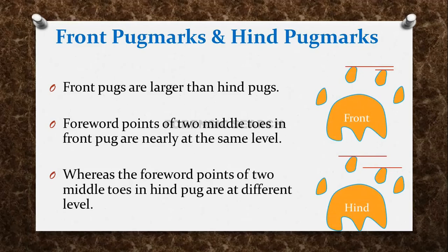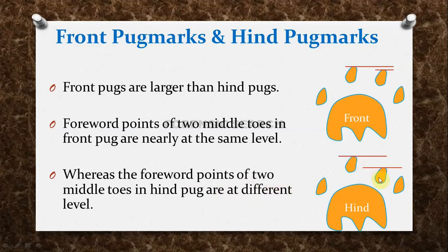So, how do we differentiate front Pugmarks from hind Pugmarks? Front Pugmarks are larger than hind Pugmarks. In front paws, the two middle toes are nearly at the same level, whereas in hind paws, the forward points of the two middle toes are at different levels. This is the front Pugmark and this is the hind Pugmark.